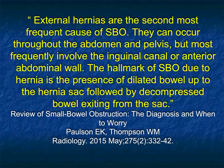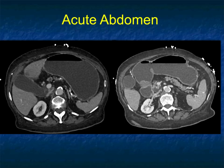External hernias are the second most frequent cause of small bowel obstruction. They can occur throughout the abdomen and pelvis, but most frequently involve the inguinal region or anterior abdominal wall. The hallmark of small bowel obstruction due to hernia is the presence of dilated bowel up to the hernia sac, followed by decompressed bowel exiting from the sac.